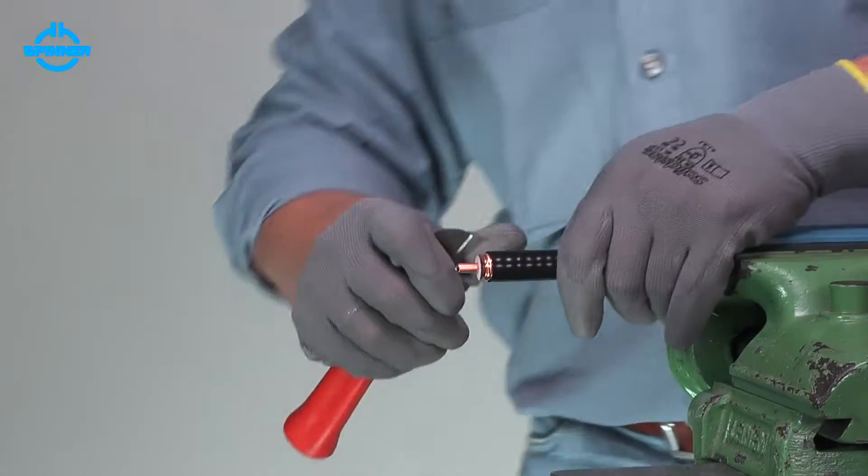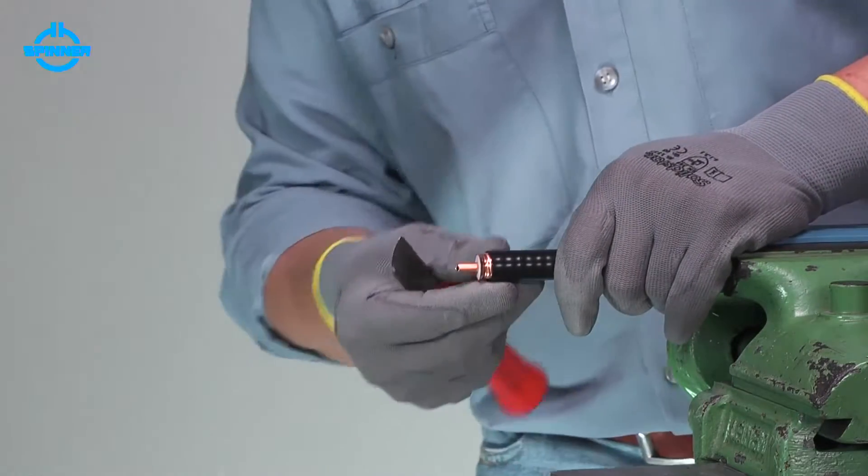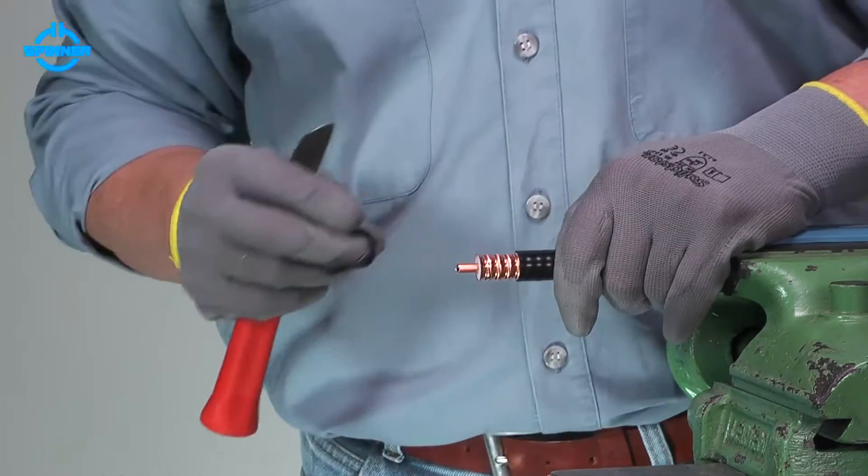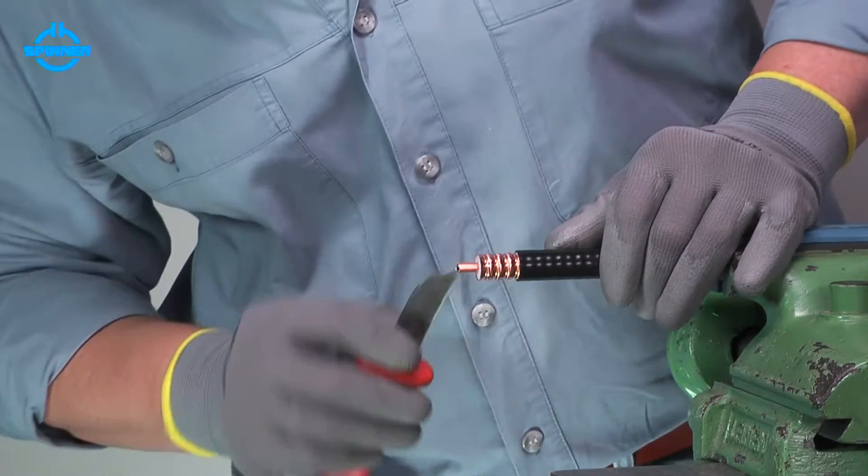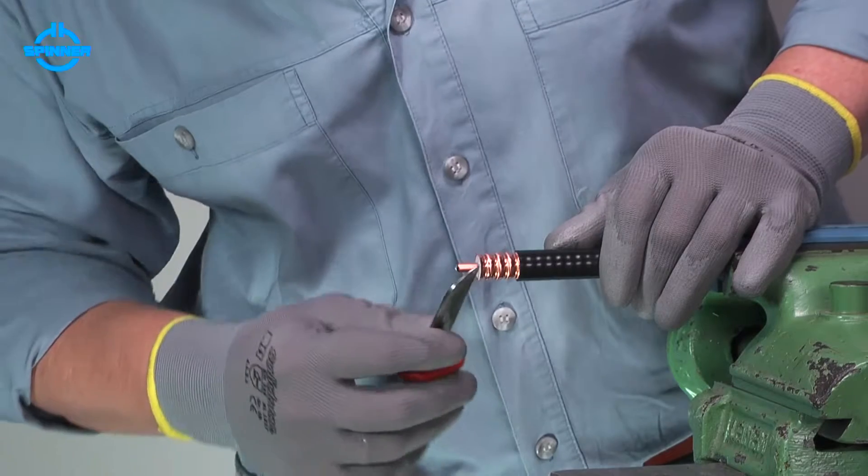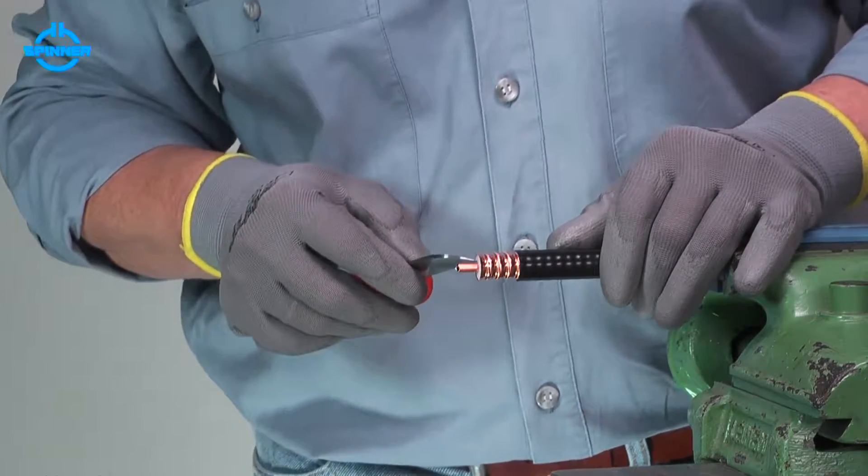Remove the jacket with a knife to the slit. If necessary, clear the inner conductor of all foam and adhesive.